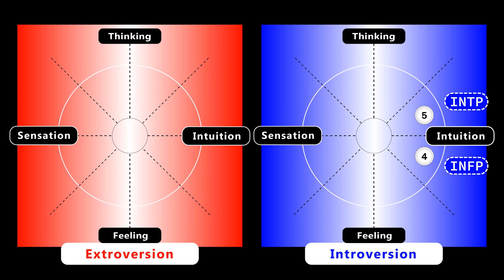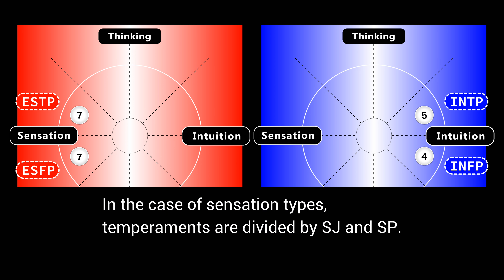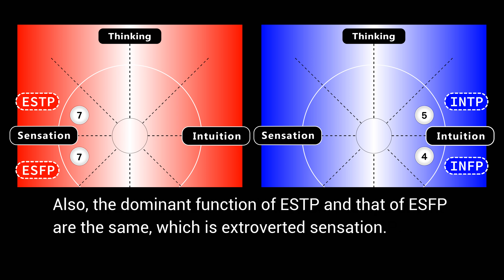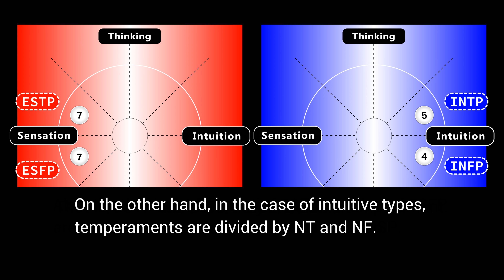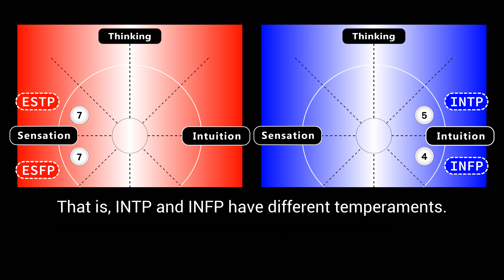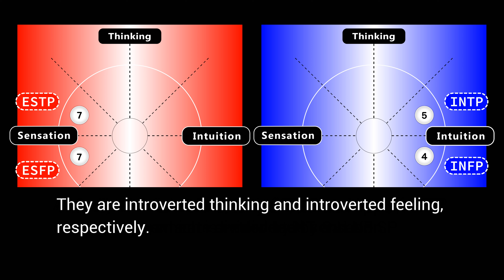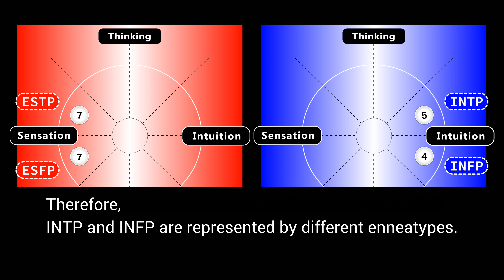INTP and INFP are represented by different ennea types. On the other hand, ESTP and ESFP are represented by the same ennea type. The reason can be explained as follows: in the case of sensation types, temperaments are divided by SJ and SP — so ESTP and ESFP have the same temperament. Also, the dominant function of ESTP and that of ESFP are the same: extroverted sensation. Therefore, they are similar. On the other hand, in the case of intuitive types, temperaments are divided by NT and NF — so INTP and INFP have different temperaments. Also, the dominant function of INTP and that of INFP are different: they are introverted thinking and introverted feeling, respectively. Therefore, INTP and INFP are represented by different ennea types.